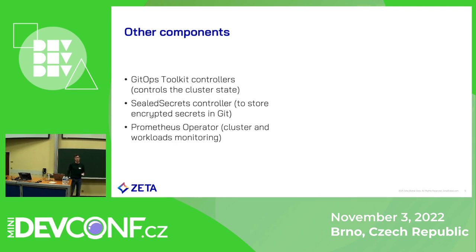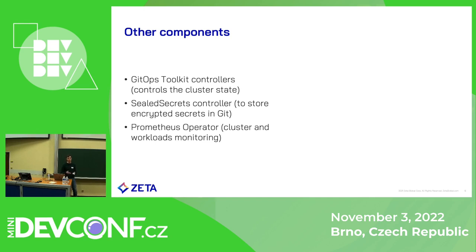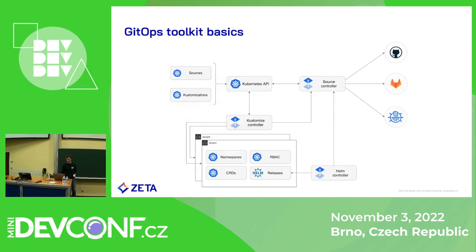Other more interesting components we use are the GitOps toolkit, the Sealed Secrets controller from Bitnami, and the Prometheus Operator. The Sealed Secrets controller allows us to store secret resources in Git — it encrypts secrets in a special format, you store them in Git, run kubectl apply, and the sealed secrets controller decrypts the sealed secret resource and creates the actual Kubernetes secret for you. The Prometheus Operator is used for cluster monitoring, and GitOps toolkit is our bread and butter, which we'll talk about in more detail.